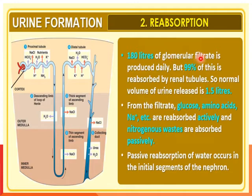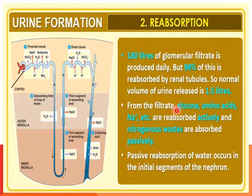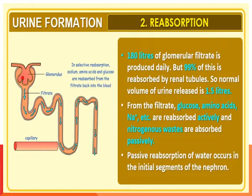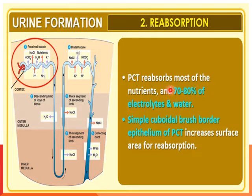The second process is reabsorption. Although 180 liters of glomerular filtrate is produced daily, 99 percent of this is reabsorbed by the renal tubule, so the normal volume of urine released is only 1.5 liters. From the filtrate, glucose, amino acids, and sodium are reabsorbed actively, while nitrogenous wastes are absorbed passively. The PCT reabsorbs most of the nutrients and 70 percent of electrolytes and water. The simple cuboidal brush border epithelium of the PCT increases the surface area for absorption.